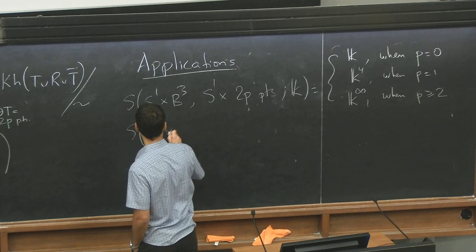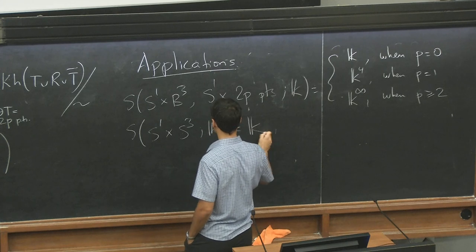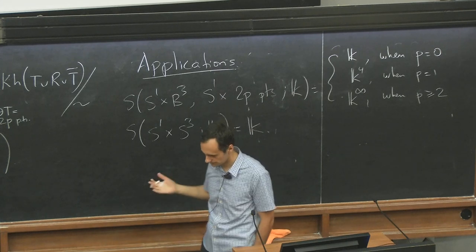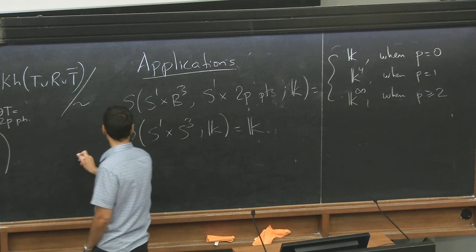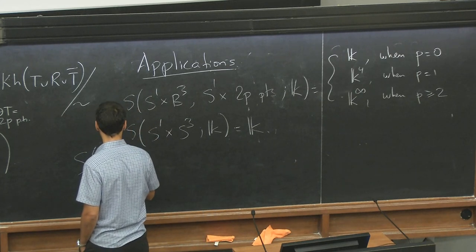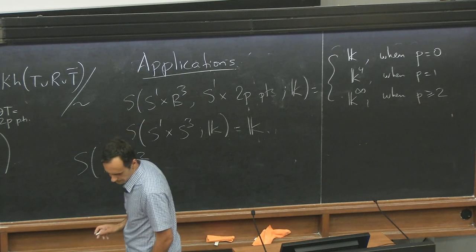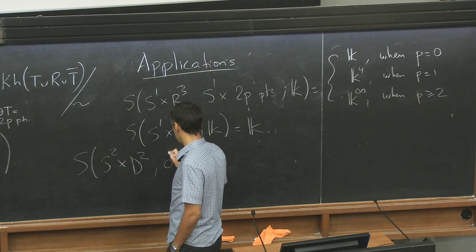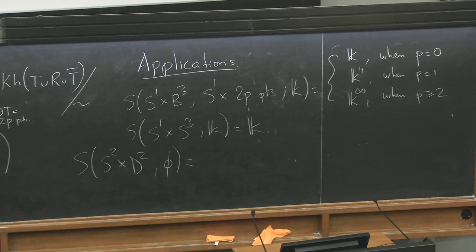You can also look at S of S1 times S3. In this case, you get something, again, with the empty link in the boundary, because there's no boundary. You get one dimensional. You can look at S of S2 times D2. Let's say, with the empty link.